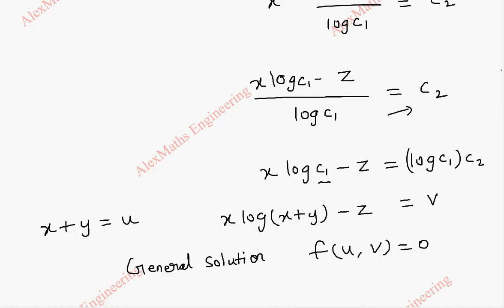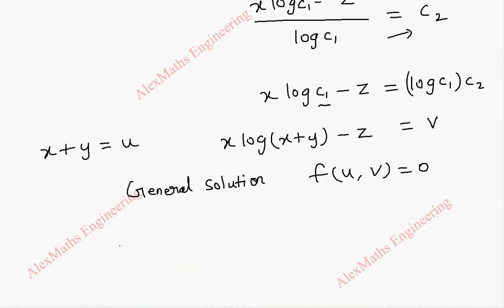So from this we can take f of x plus y comma x log of x plus y minus z equal to 0. This is our required general solution.